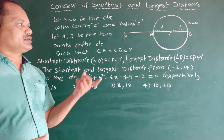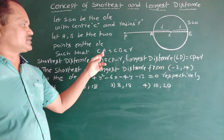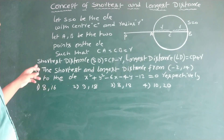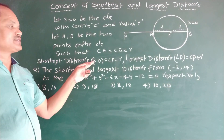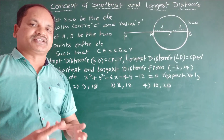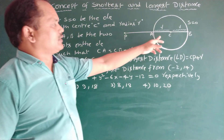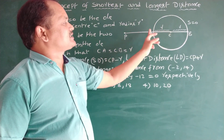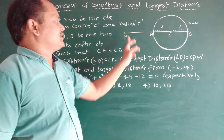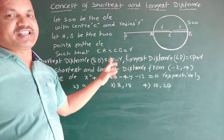CA equals CB equals R, which means AB is the diameter. The center divides the diameter into two equal parts, so CA equals CB equals R. The shortest distance from the point P to the circle is PA, where PA equals PC minus AC. Since AC equals R, the shortest distance is CP minus R.